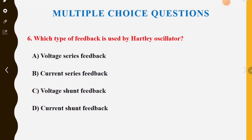Sixth MCQ: which type of feedback is used by the Hartley oscillator? Option A is voltage series feedback, Option B is current series feedback, Option C is voltage shunt feedback, Option D is current shunt feedback.